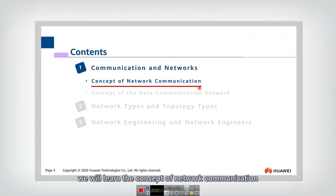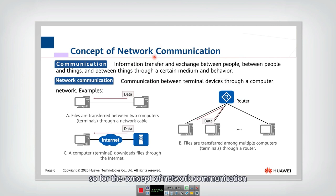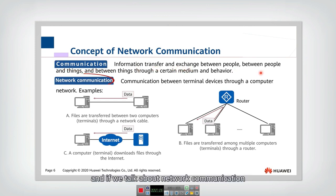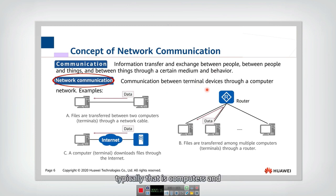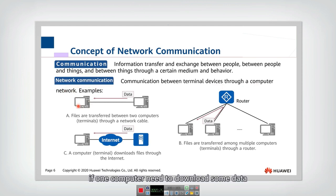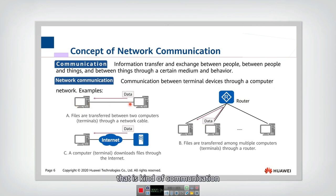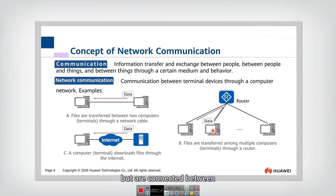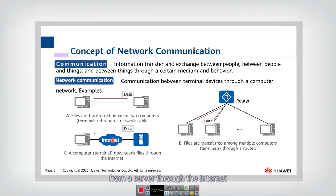We will learn the concept of network communication. Communication is the information transfer and exchange between people and between things. Network communication specifically refers to communication between terminal devices — typically computers — through a computer network. For example, one computer downloading data from another directly connected computer, or file transfer between two networks connected via a router, or a computer downloading files from a server through the internet — all of these are network communication.